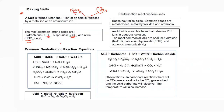Common reactions for acids include neutralization: acid reacts with base to give salt and water. For example, HCl + NaOH → NaCl + H₂O; HNO₃ + magnesium hydroxide → magnesium nitrate + water; H₂SO₄ + NaOH → sodium sulfate + water; HCl + calcium oxide → calcium chloride + water.